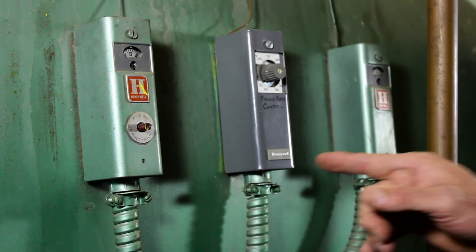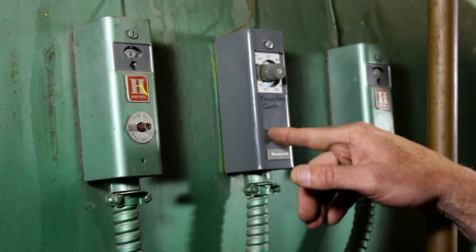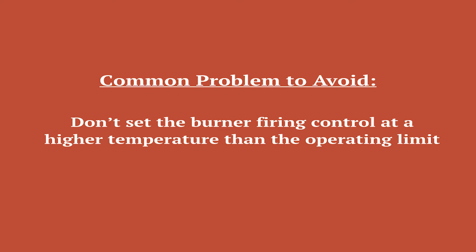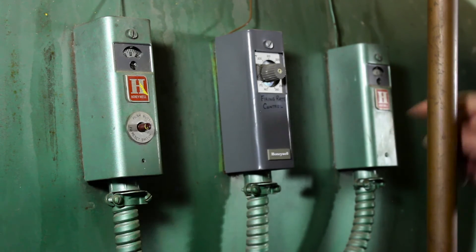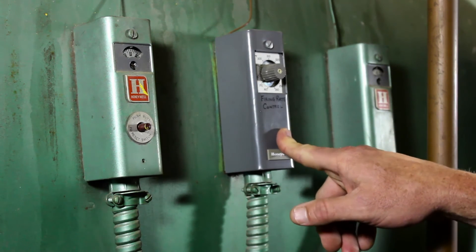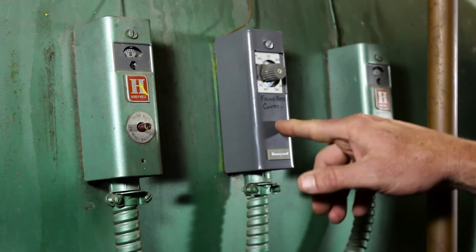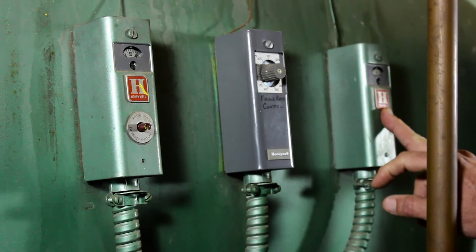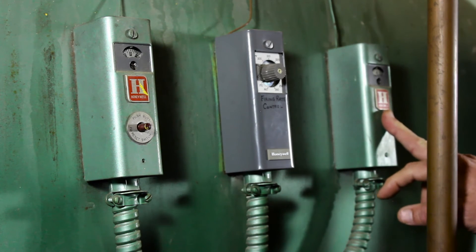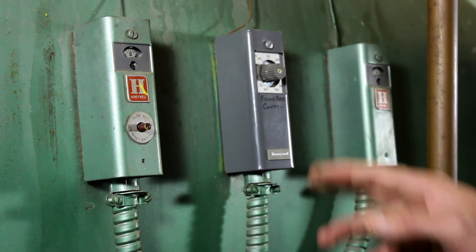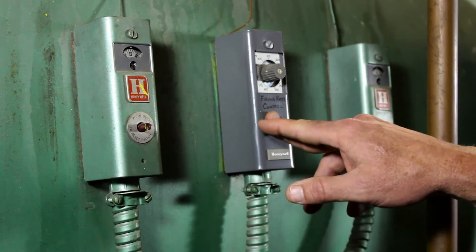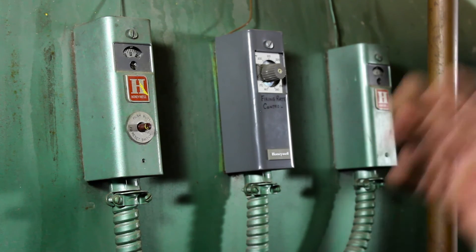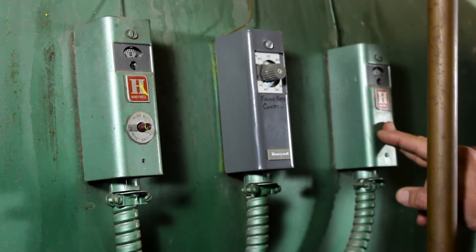One of the common problems: a lot of times people will set this firing rate controller at a higher temperature than the operating limit. What that causes is when the boiler comes on, it tries to control at the firing rate control set point. So if the operating limit is set at 180 and the firing rate was set at 200, when the boiler came on it would try to reach 200. But before it could satisfy the firing rate controller with the burner at maximum fire, it'll hit up against the operating limit and the burner will shut off. Then it shuts off, goes through a post-purge and pre-purge, and immediately when this resets, it thinks it wants to go to 200 again, the burner goes to full fire, tries to get to 200, then hits against this and shuts off again.